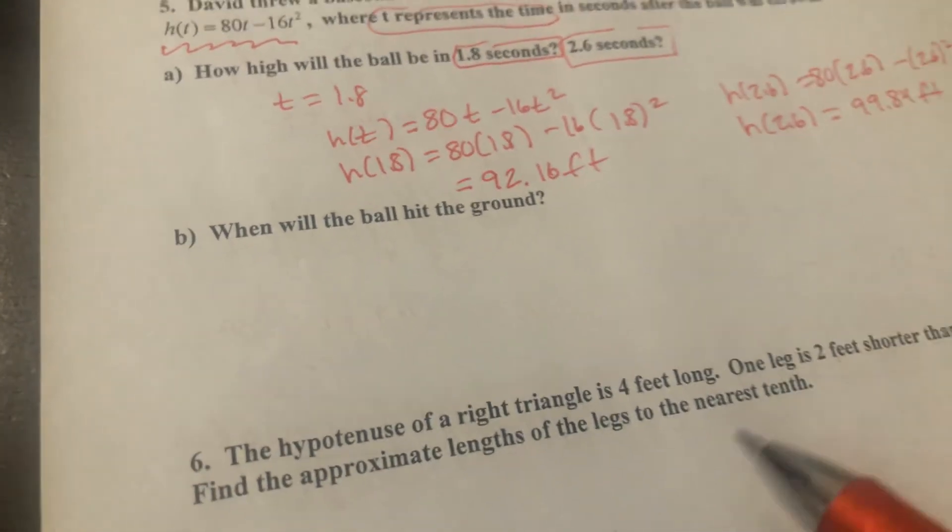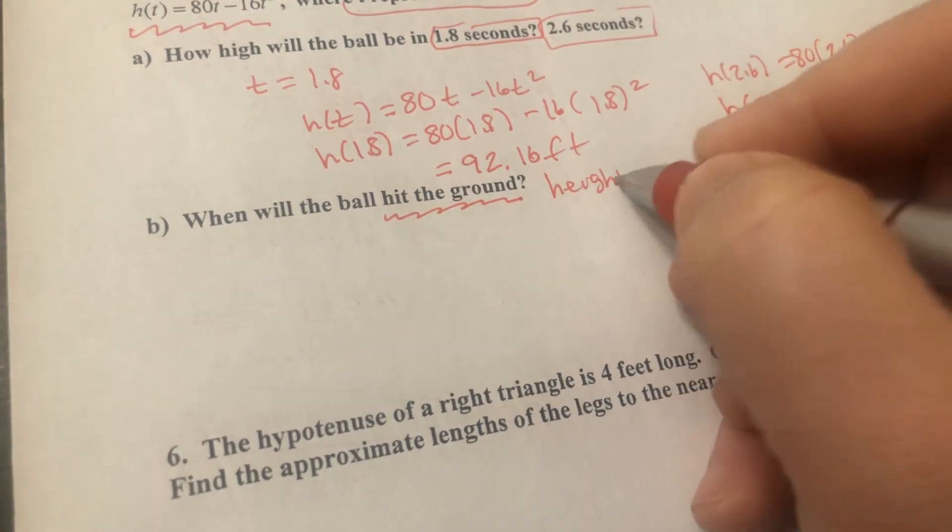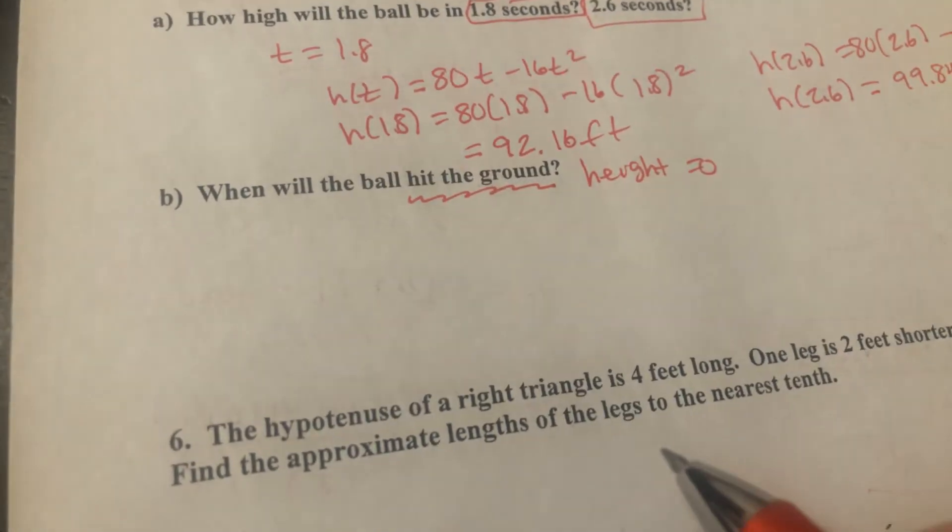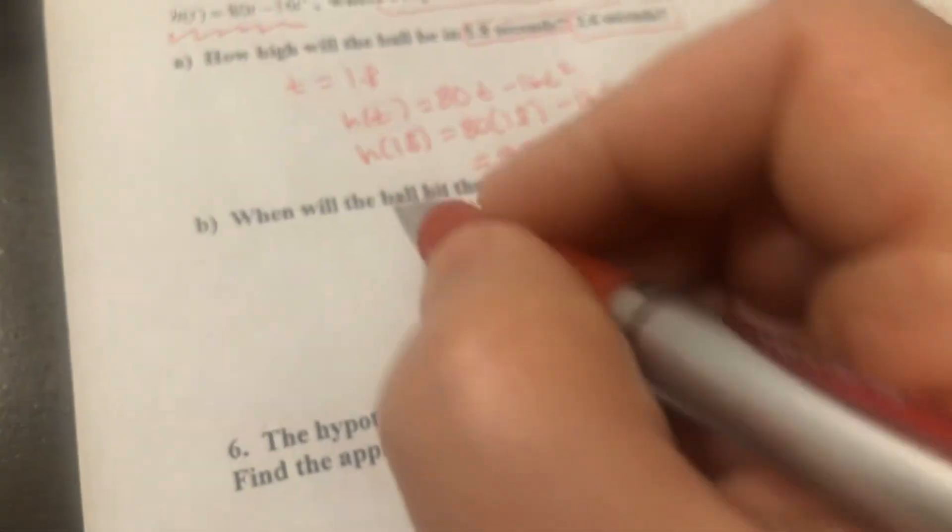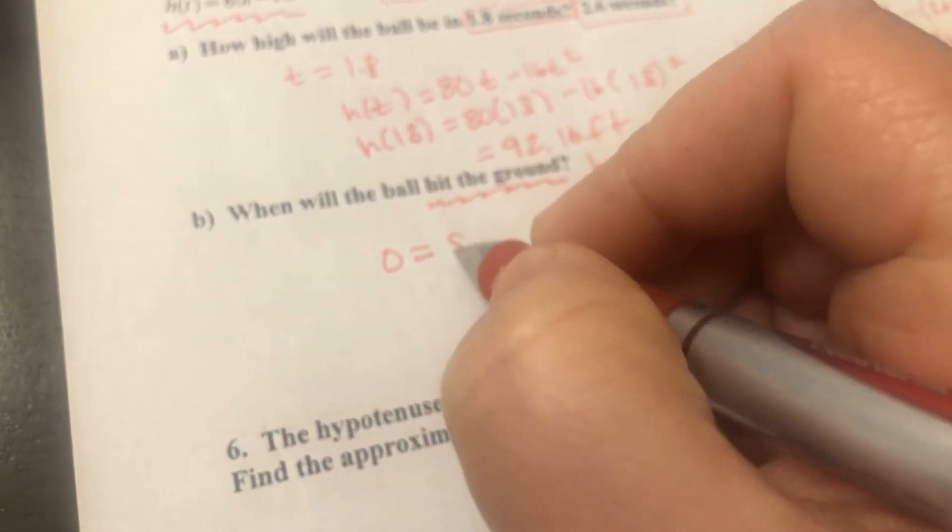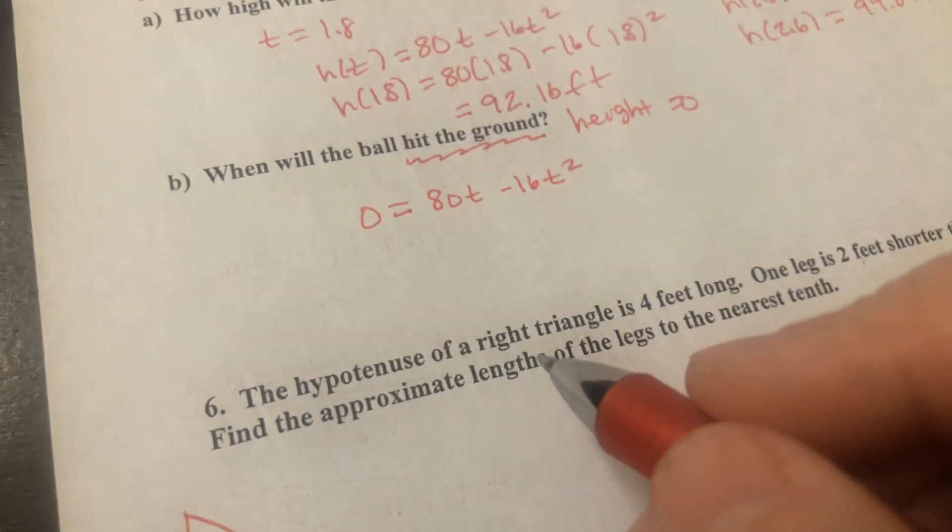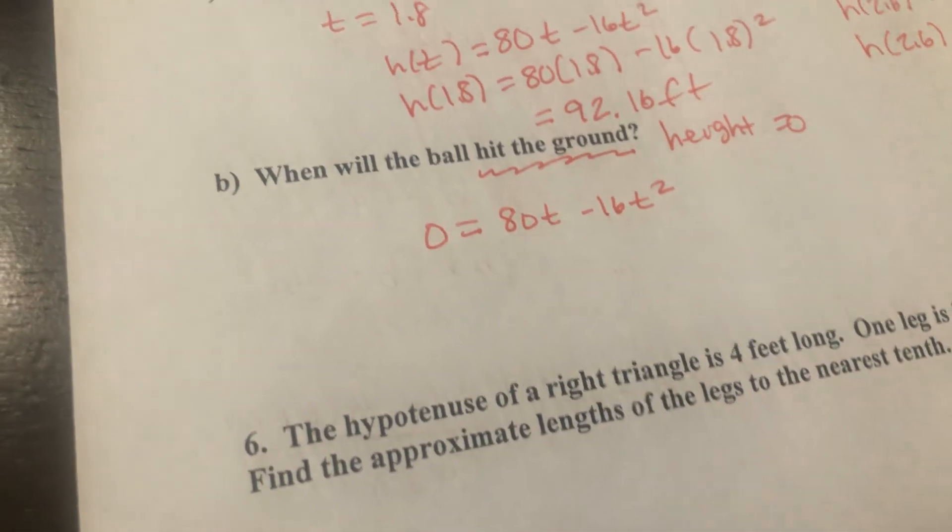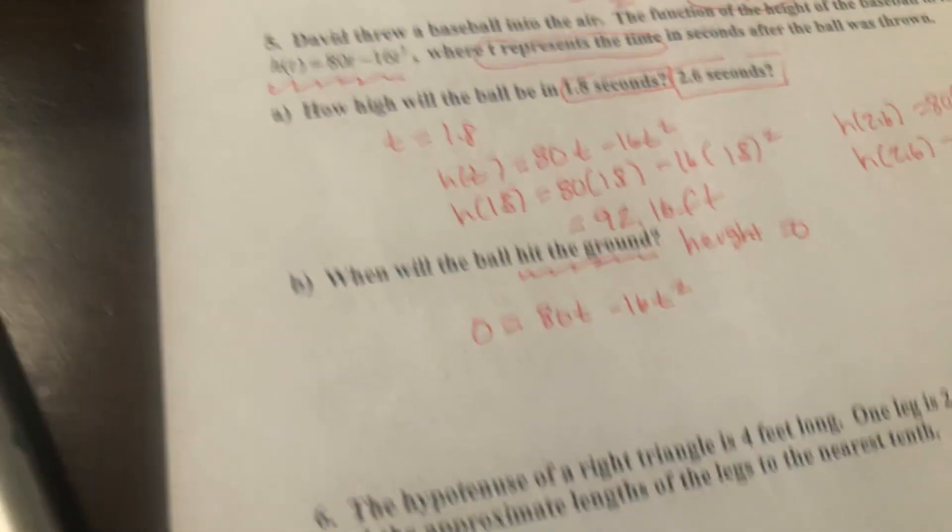All right. Next problem. When will the ball hit the ground? Hit the ground is secret math talk for height equals 0. So we are going to plug 0 in the place of the height. So 0 = 80t - 16t². So how do we solve this? Well, I'm going to stop this video and we'll solve it in the last video of the day.